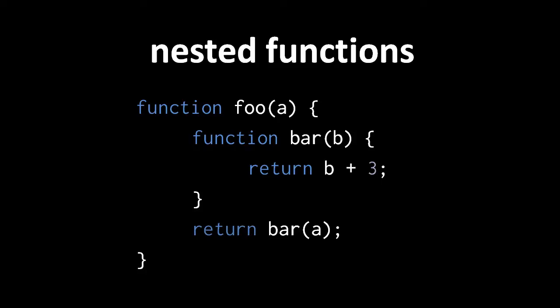Second, variables declared in a nested function, including the parameters, are local to that function, not the enclosing function. Here, for clarity, I've highlighted the variables of the outer function foo in orange and the variables of the inner function bar in red. Note that the name bar itself is confusingly a local variable of the outer function foo.